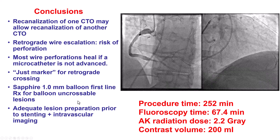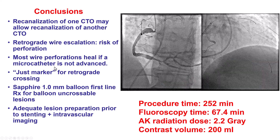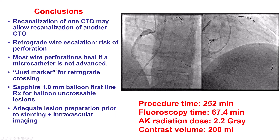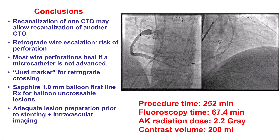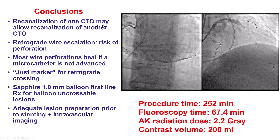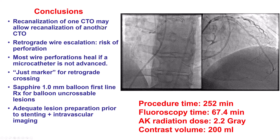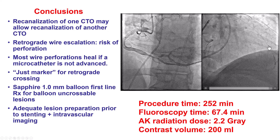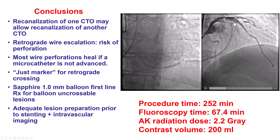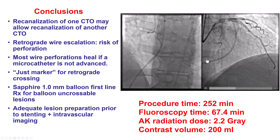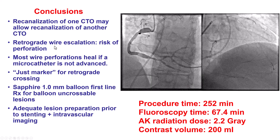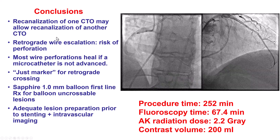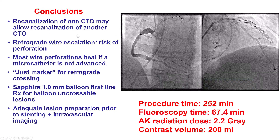Several lessons from this case. The first is that in patients who are morbidly obese, surgical revascularization may not be the best option. Second, we had multiple CTOs, and what happened is we recanalized one CTO — the LAD — and then used that vessel to go retrograde and recanalize the RCA. Recanalization of one CTO may be very useful for going retrograde and recanalizing another CTO.